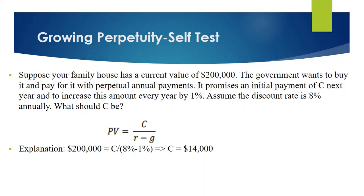Here is an example of growing perpetuity. Suppose the current value of your house is $200,000. If the government acquires your house, the cash flows you will receive from the government will increase by 1% every year. We also assume that your discount rate is 8%. Now we need to find out what your cash flows will be.